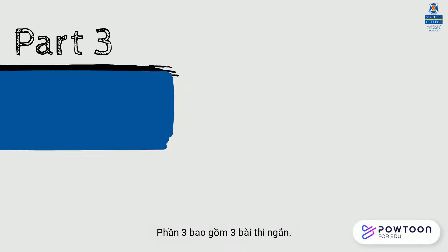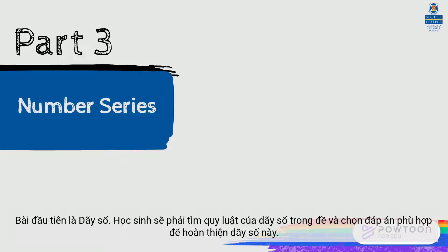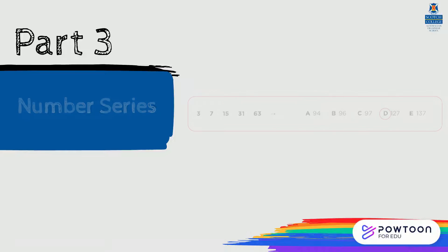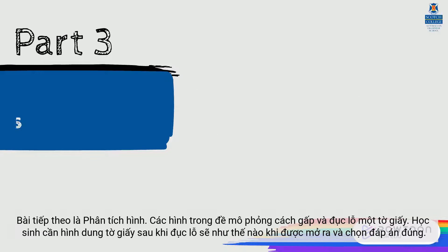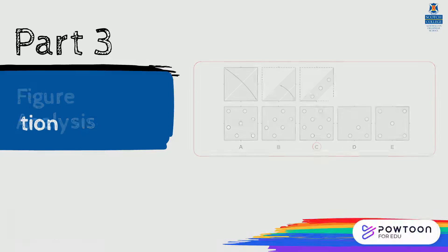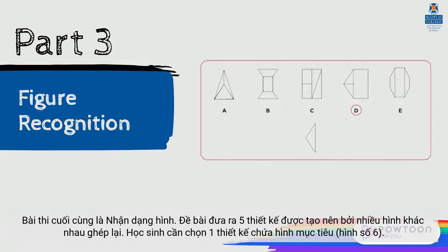Part 3 includes three short tests. The first test is Number Series — you will work out the rule underlying the progression in the number series, and then select the next number in the series. The second test is Figure Analysis — you will work out what the final product would look like when unfolded. The last test is Figure Recognition — you will identify which of the five designs contains the exact same outline of the target, including each side in full.